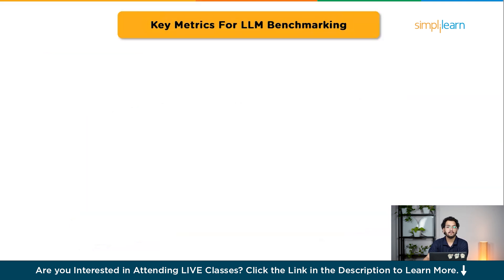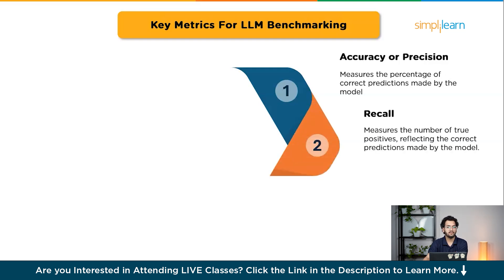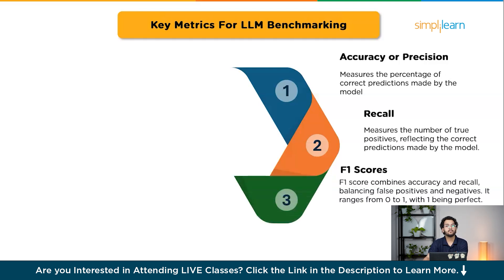Now let's look at key metrics for benchmarking LLMs. The first is accuracy or precision, which measures the percentage of correct predictions made by the model. The second is recall, also known as sensitivity, which measures the number of true positives reflecting correct predictions. The third is F1 score, which combines both accuracy and recall into a single metric, weighing them equally to address false positives or negatives. F1 score ranges from 0 to 1, where 1 indicates perfect precision and recall.